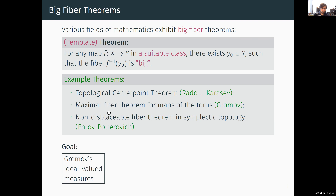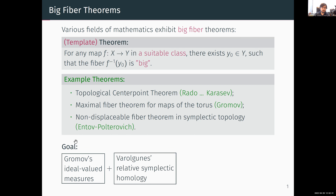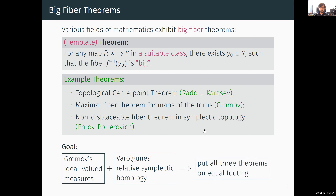The goal is to use an idea due to Gromov called ideal valued measures. This idea can be used to prove the first two theorems. The third one was originally proven using quasi-states, which look very different from ideal valued measures. The idea is to combine it with Varolgünesh's relative symplectic homology, and within this framework we can put all three theorems on equal footing. Moreover, we can deduce a symplectic analog of the first two theorems.